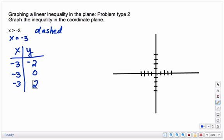Plot those points. When x is negative 3, y is negative 2. When x is negative 3, y is 0. When x is negative 3, y is positive 2. It's going to be a dashed line.